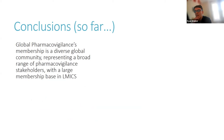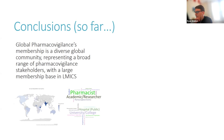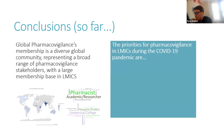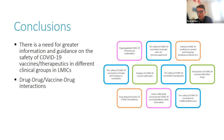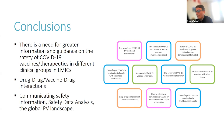In terms of conclusions so far, Global Pharmacovigilance's membership is a diverse global community representing a broad range of pharmacovigilance stakeholders with a large membership base in LMICs, as demonstrated from our demographic data. In terms of the priorities for pharmacovigilance at the moment, they are to be determined — watch this space. Our post-workshop survey is due to close on Friday, and we'll have a far greater idea then of exactly how these priorities are going to be ranked. What we can say is that there is a need for greater information and guidance on the safety of COVID-19 vaccine therapeutics in different clinical groups in LMICs. We can also make similar conclusions in relation to drug-drug and vaccine-drug interactions, and further research is needed on improving communication, safety data analysis, and awareness of the global pharmacovigilance landscape.